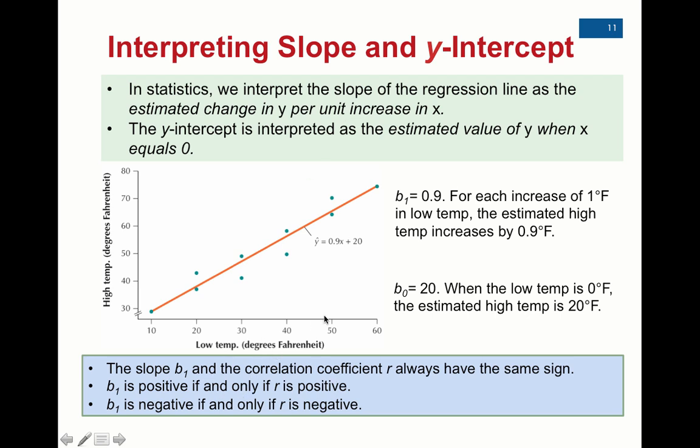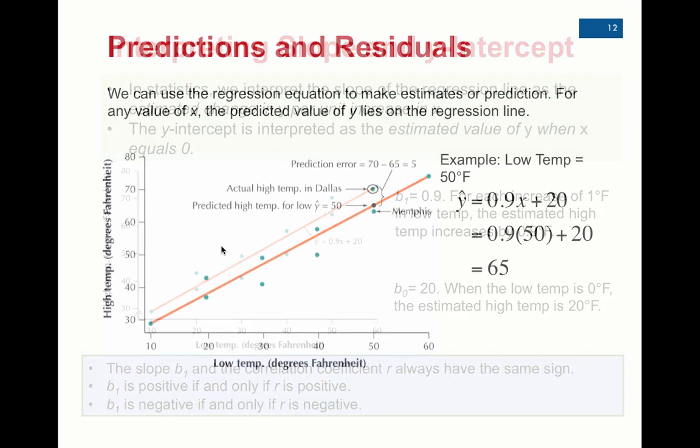The other thing we can always count on is that the slope of the best fit line, if it's positive, then the correlation coefficient will be positive. And if the slope of the best fit line is negative, then we can expect the correlation coefficient to be negative. So they'll have that relationship, but they do not have the same value. Very important to remember.